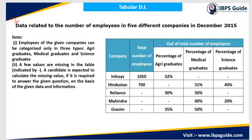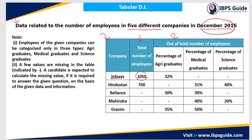The direction of the question is: data is related to the number of employees in five different companies in December 2015. This is a table DI. There are five companies — Infosys, Hindustan, Reliance, Mahindra, and Grasim. The second column indicates the total number of employees working in these five companies in December 2015. The third column shows the percentage breakdown: out of the total employees, they are divided into three categories — agricultural graduate, medical graduate, and science graduate.